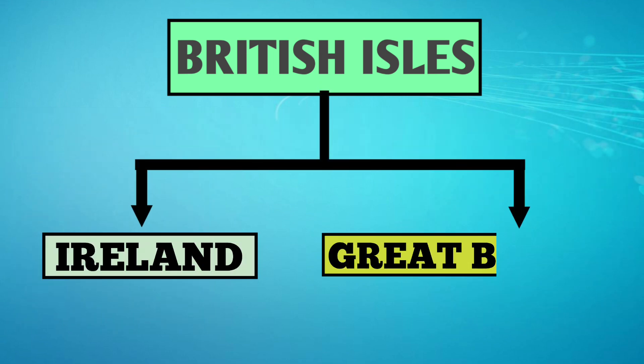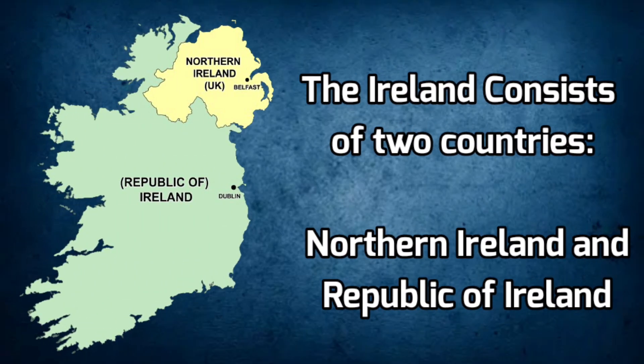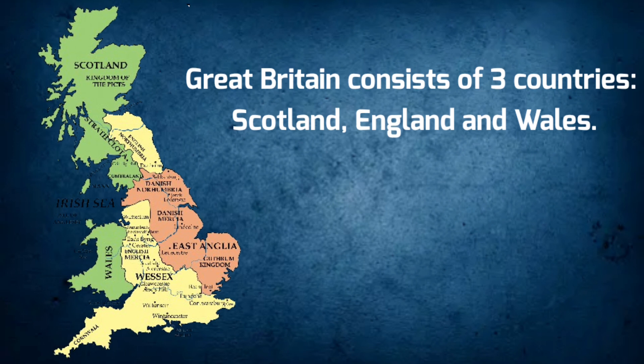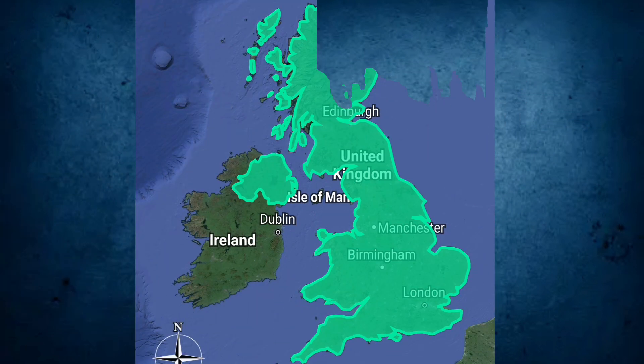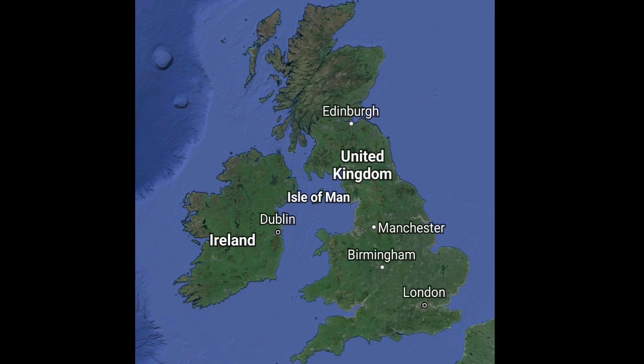The two main islands are Ireland and Great Britain. The island of Ireland consists of two countries: Northern Ireland and the Republic of Ireland. Great Britain consists of three countries: Scotland, England, and Wales.